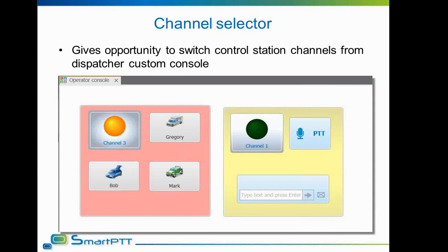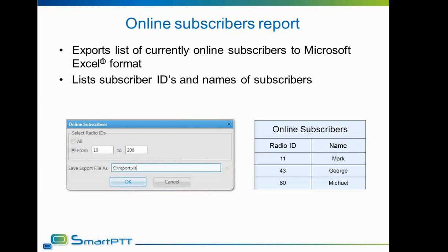The next internal SmartPTT feature is the online report. The Online Subscribers report will show all currently online subscribers in Microsoft Excel format. In the list, IDs and corresponding subscriber names assigned to them are listed. The dispatcher can choose a range of IDs to form a report from. This is a self-describing feature.